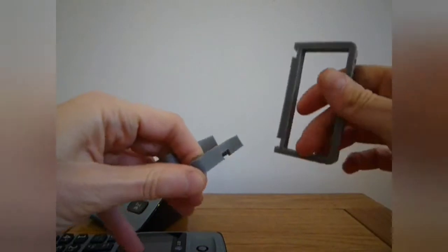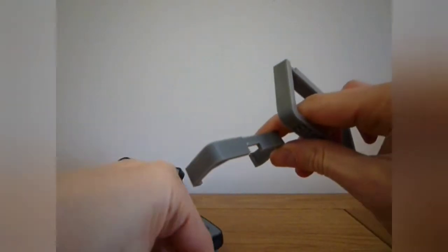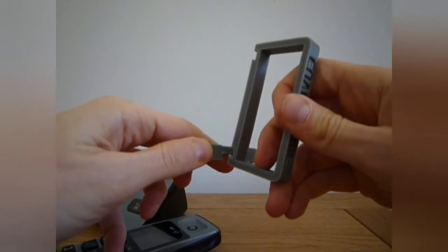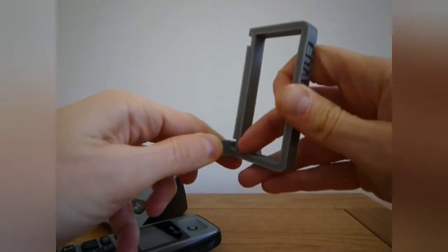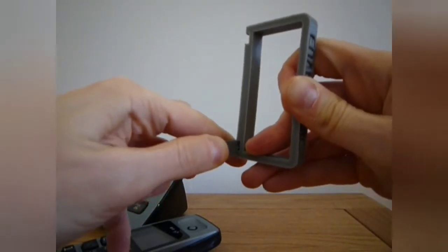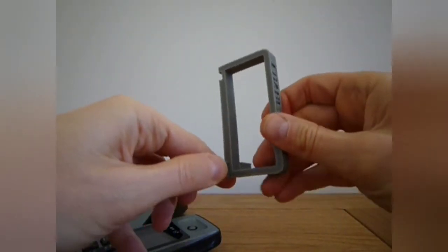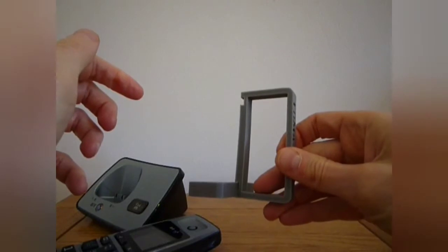The easiest way to put these together is to simply line the notch up and then just click them into place, like so. When they're all in place, it can then slide down the phone.